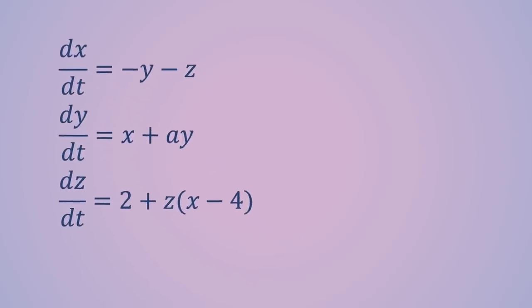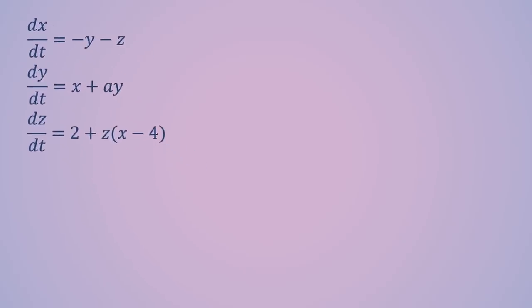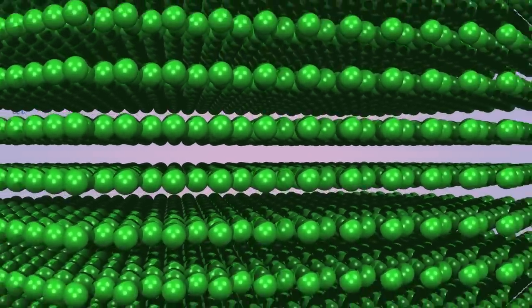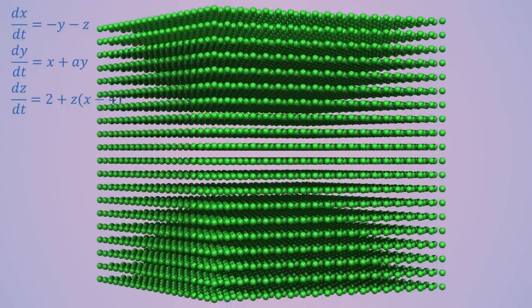Watch this vector field in space. The field depends on a parameter A. Let's start by choosing A equal to 0.3 and watch what happens for a large number of initial conditions.